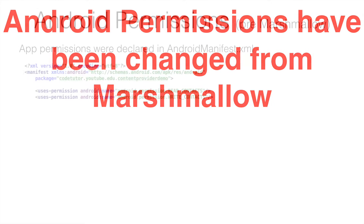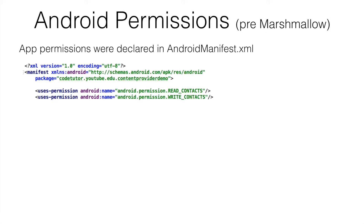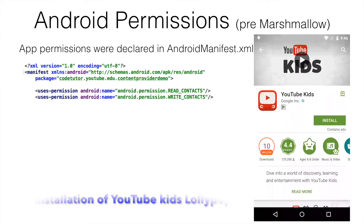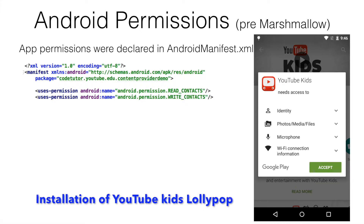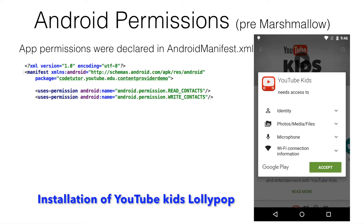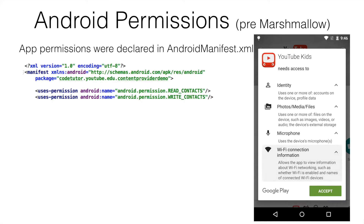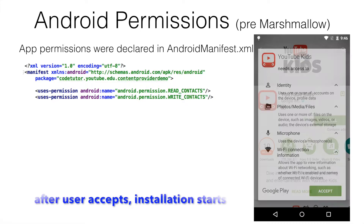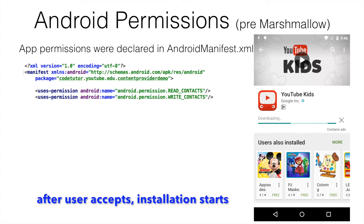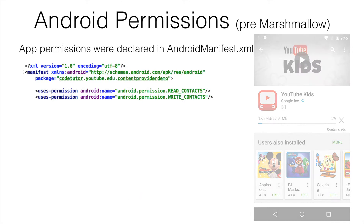If you remember, permissions have always been declared in the manifest file of our Android application. For example, if you want to read contacts or write contacts, the permissions have to be declared in the manifest file. The developer used to declare the permissions in the manifest, and at the time of installation the application would show a dialog box asking you to grant these permissions. Once the user granted the permissions, the application would get installed.